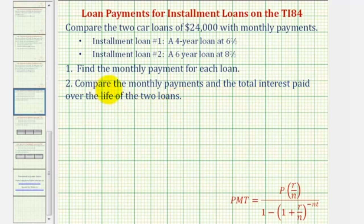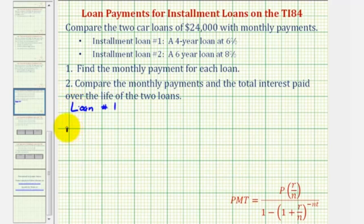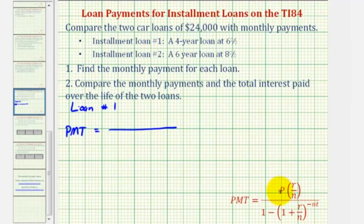To determine the monthly payments, we'll be using the installment loan formula, where PMT represents the monthly payment. For loan number one, the monthly payment will be equal to this quotient where P is the loan amount, or $24,000.